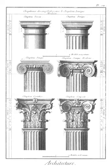Atrium (plural: atria): inner court of a Roman or C20 house; in a multi-story building, a top-lit covered court rising through all stories. Attic: small top story within a roof above the uppermost ceiling; the story above the main entablature of a classical facade.